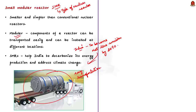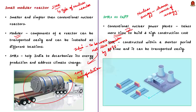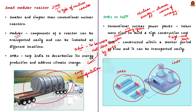Conventional nuclear power plants have various challenges — they take many years to construct and involve very high building costs due to high-end technologies. In contrast, Small Modular Reactors can be constructed within a shorter period of time and can be transported easily, making them a good alternative to traditional nuclear reactors with the potential to replace conventional nuclear power plants.